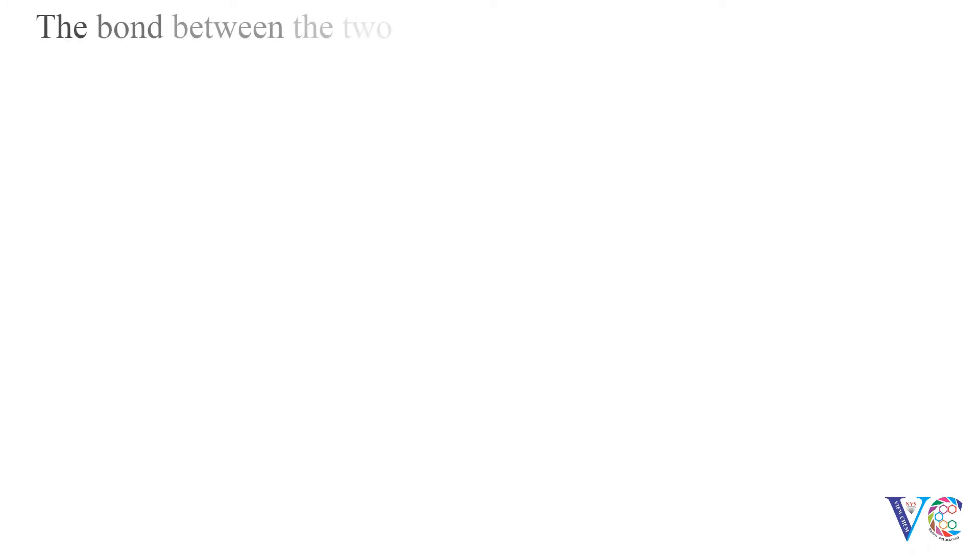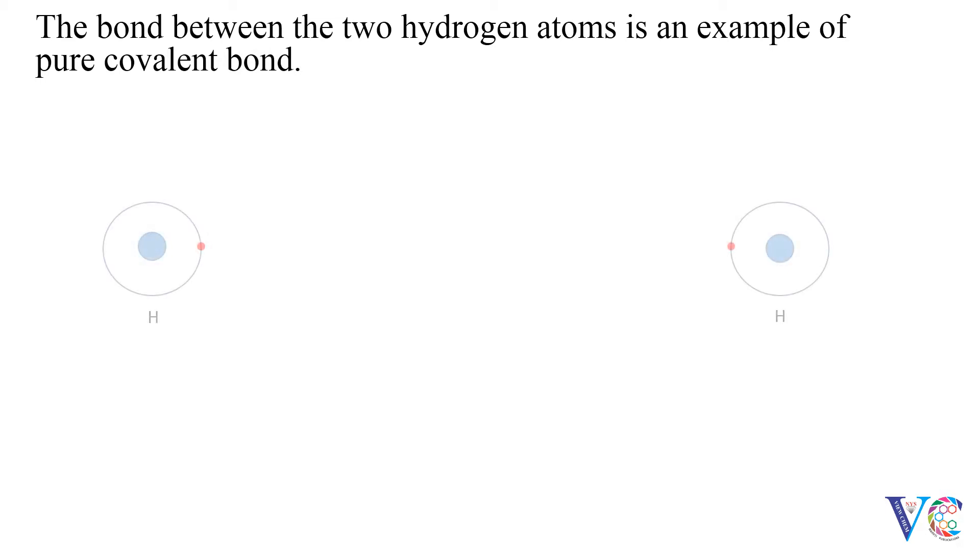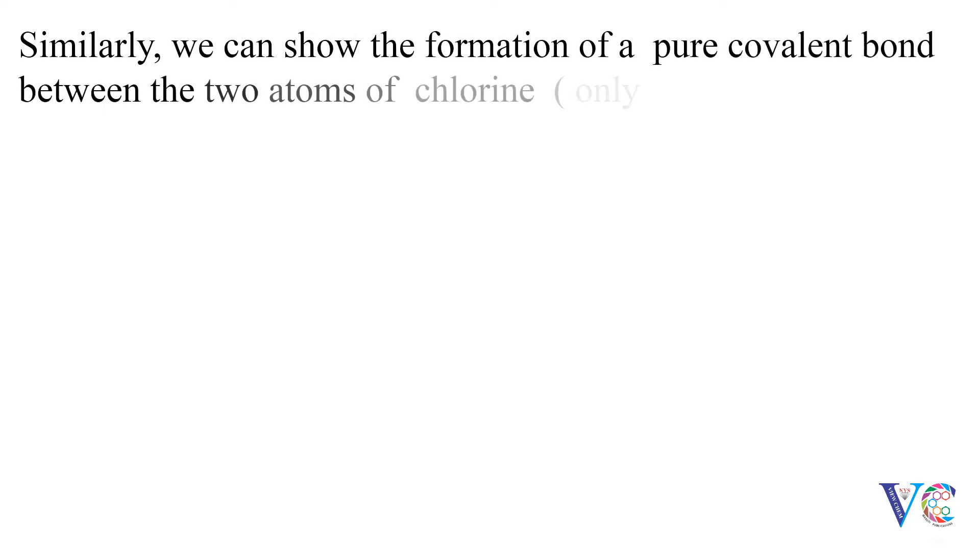The bond between the two hydrogen atoms is an example of a pure covalent bond. Similarly, we can show the formation of a pure covalent bond between the two atoms of chlorine. Only the seven valence electrons of each chlorine atom are shown.